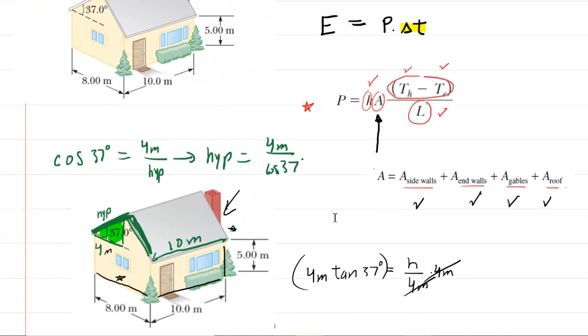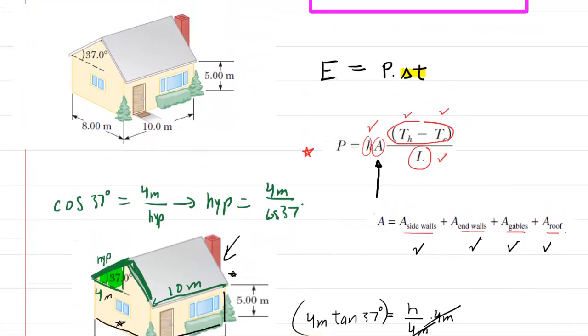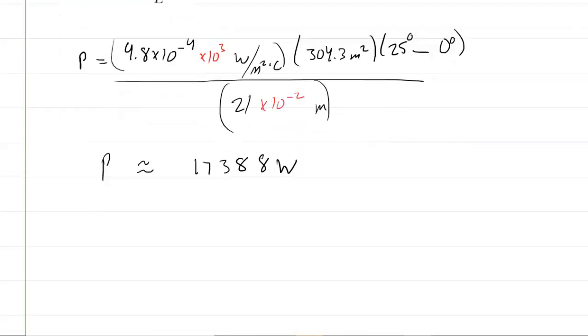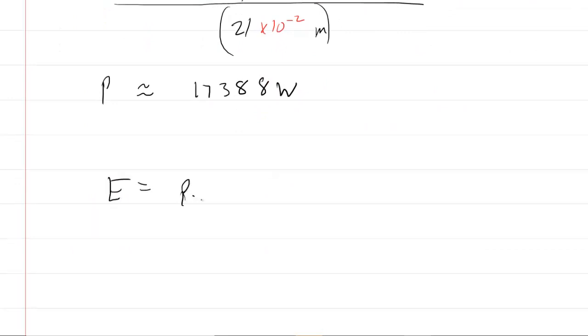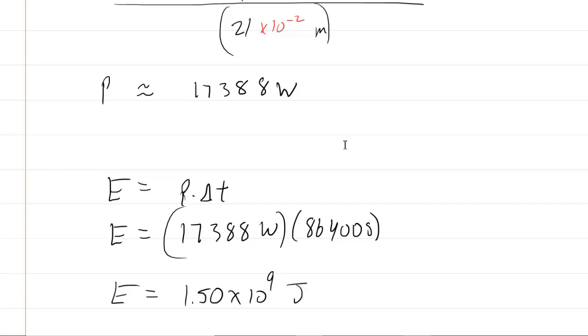We are getting somewhere. We can now get the energy because we know that energy equals power multiplied by the time interval. In this case, we're calculating the amount of energy within one day, so we'll take a time interval of 86,400 seconds. Note that is how many seconds there are in a day. Now you get this really large number. We're going to put this into scientific notation. You'll end up with about 1.50 × 10⁹ joules.